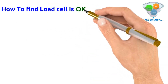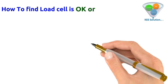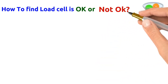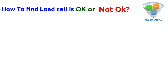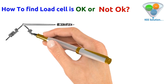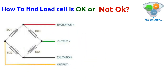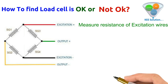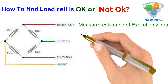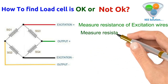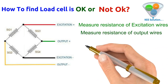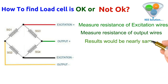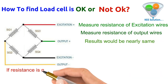Now we will find out how to determine if a load cell is OK or not by measuring its resistance. Measure the resistance between the two excitation wires, then measure the resistance of the signal/output wires. The result should be nearly the same if the load cell is OK.